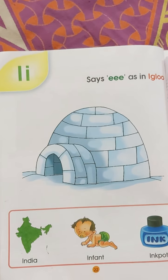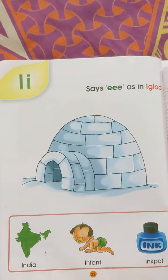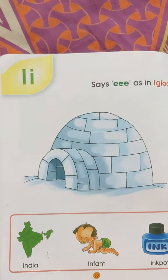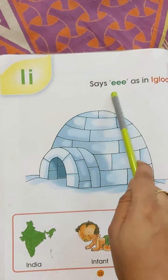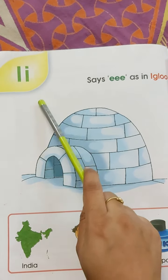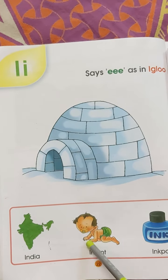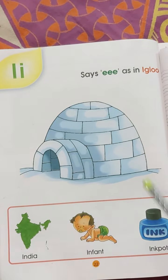Before, let's read letter I with a phonetic sound. Now children, you will also read with me loudly. I, E, Igloo. I, E, India. I, E, Infant. I, E, Inkpot.